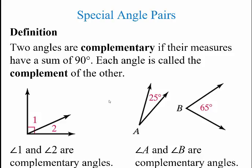Now for special angle pairs. Two angles are complementary if their measures have a sum of 90 degrees; each angle is called the complement of the other. For example, here we have a 90-degree angle — angles 1 and 2 add together to get 90 degrees. Also, angle A and angle B shown separately, where 25 plus 65 equals 90 degrees, would also be complementary.